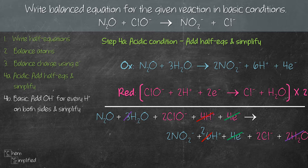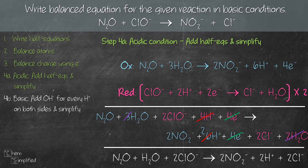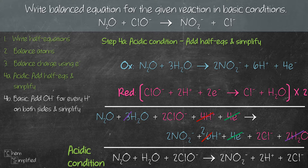Rewriting the equation gives us: N₂O + H₂O + 2ClO⁻ → 2NO₂⁻ + 2H⁺ + 2Cl⁻. That is our balanced equation in acidic condition. If acidic condition is what you're looking for, you're done and can stop right here.